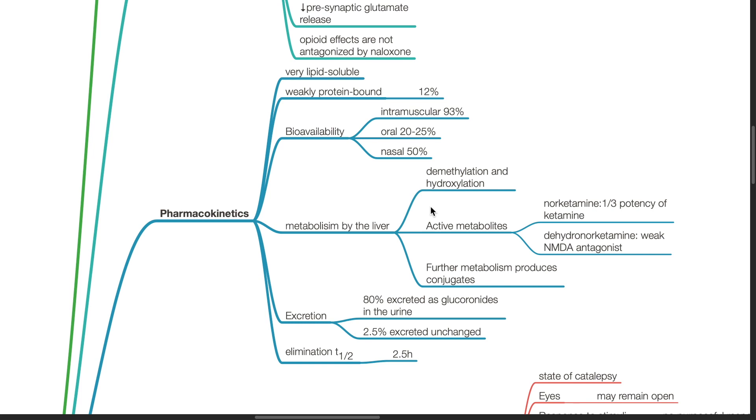Active metabolites include norketamine which has one-third the potency of ketamine and dehydronorketamine which is a weak NMDA antagonist. Further metabolism produces conjugates. 80% of conjugates are excreted in the urine as glucuronides. 2.5% of ketamine is excreted unchanged. Elimination half-life of ketamine is 2.5 hours.